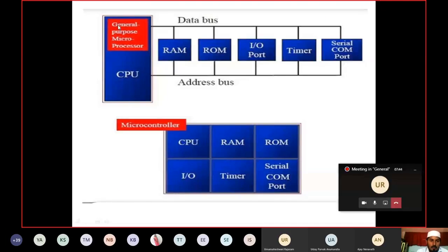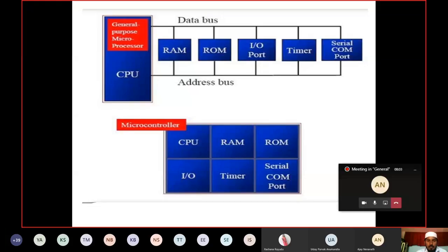This is our CPU — our processor. Internally it has ALU, some registers, and other things as we saw in our first class. This CPU is fabricated on a chip, on an IC. Whereas RAM, ROM, input-output ports, timers, and serial communication ports are all external to this IC.